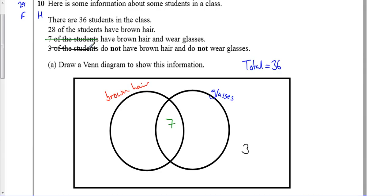Cross that one off. And it says 28 students have brown hair, so inside the circle here, there's got to be a total of 28, but I've already got seven of them. So, if I do 28 minus 7 gives me 21, then I know in this section there's got to be 21.